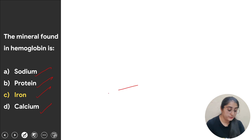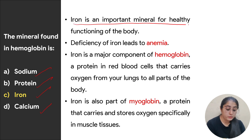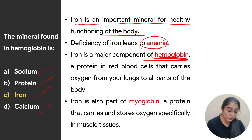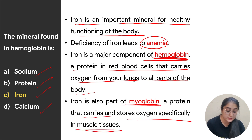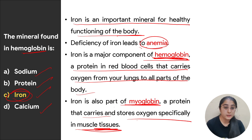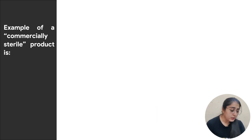Next: the mineral found in hemoglobin is — options are sodium, protein, iron, or calcium. Iron is an important mineral for healthy body functioning; deficiency leads to anemia. Iron is a major component of hemoglobin, a protein in red blood cells that carries oxygen from the lungs to all parts of the body. Iron is also an important part of myoglobin, which carries and stores oxygen in muscle tissue. The correct answer is iron.